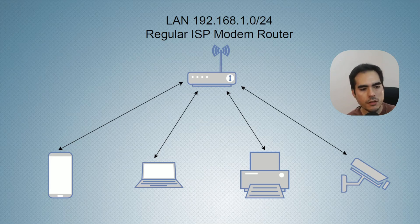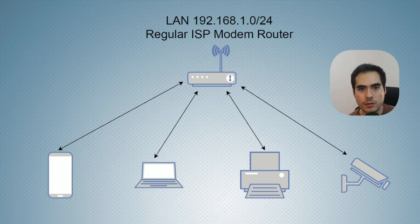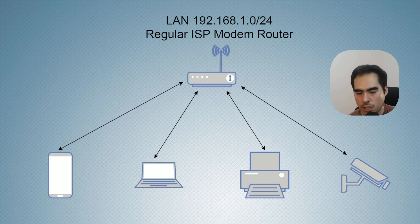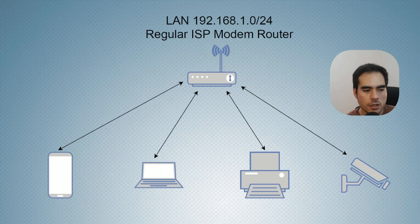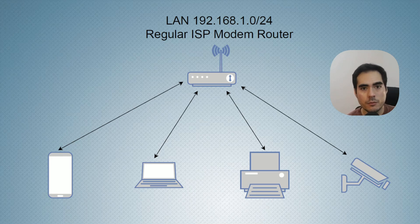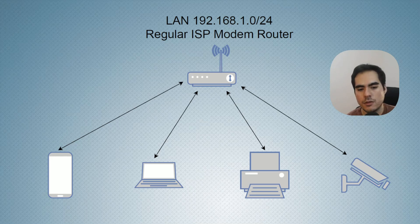If we talk about security, let's say you have guests on your network — people that come to your home or, if you have a small business, to your business. You want to provide them with internet access. If they connect to this single network, they will also be able to see your security system, your point-of-sale system, or your server. Someone with malicious intentions could create security issues. So with a single network, security is something you cannot manage properly.